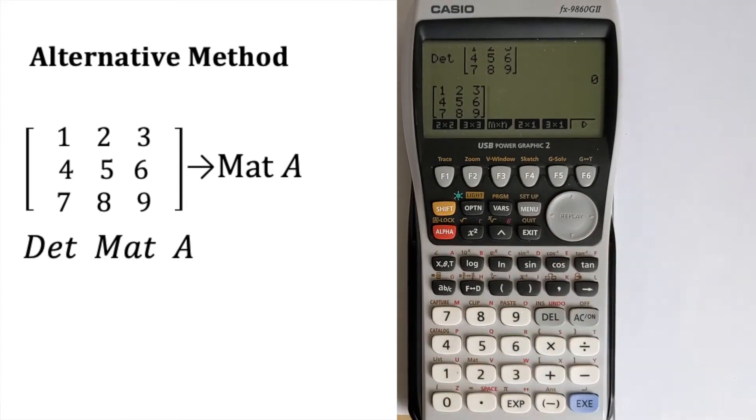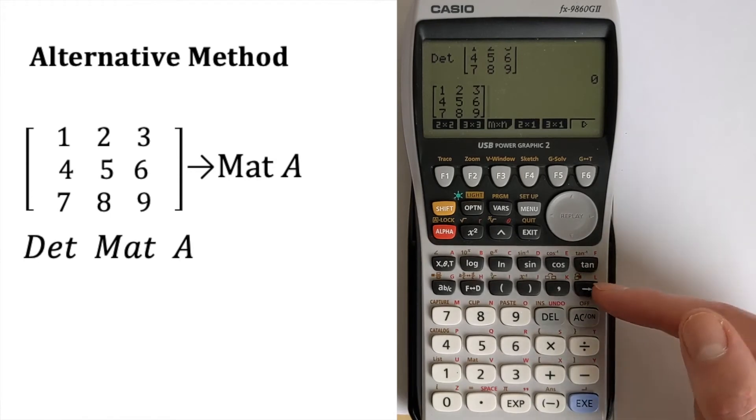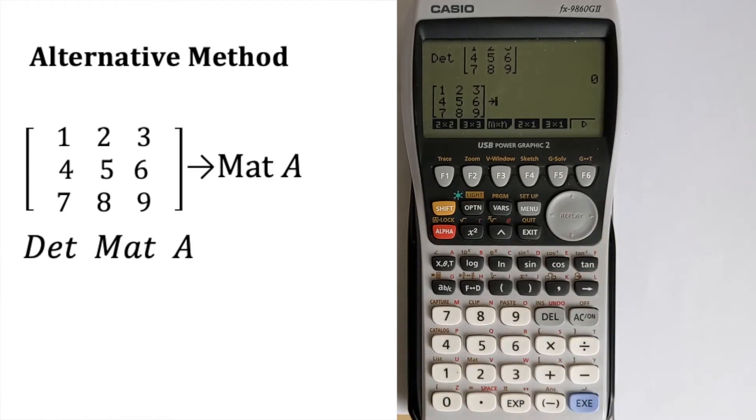Then what you can do is you can store this and use this arrow button here. So the arrow button assigns it to a particular variable. You can't just store it in A. It won't let you do that. You have to store it in matrix A.